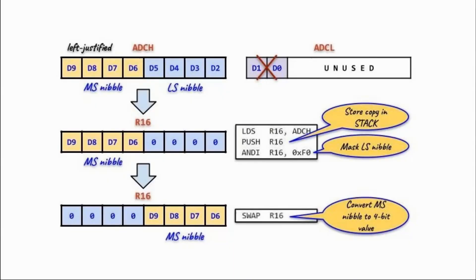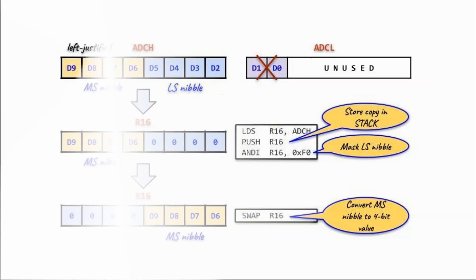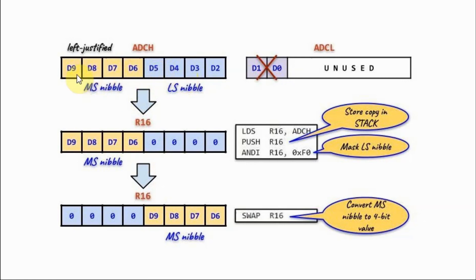Now let's look at the steps needed to display the 8-bit digitized value in hexadecimal on the LCD screen. The ADC is programmed so that the 10-bit result copied into register pair ADCH and ADCL is stored in a left-justified manner. We ignore the two bits stored in ADCL and focus on the 8 bits in ADCH. This 8-bit value is split into two parts: the most significant nibble and the least significant nibble, representing the two hexadecimal digits.